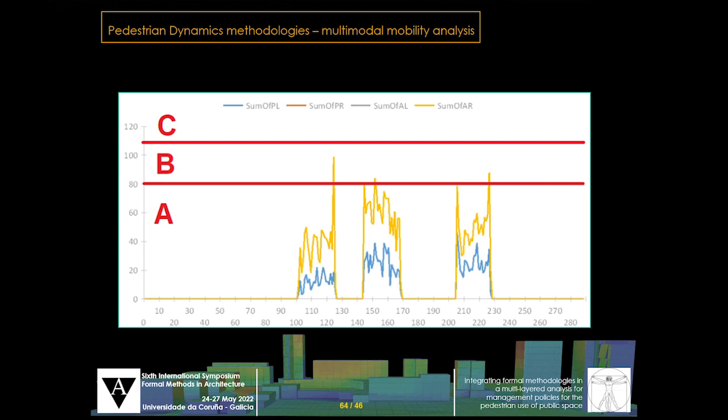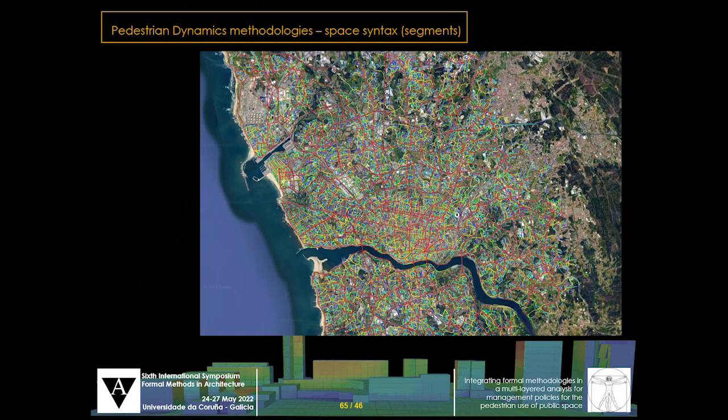The easiest theoretical methods used in the project were those currently used in traffic engineering, multimodal mobility analysis. Here is an example of the levels of pedestrian service for a certain street along the day. Space syntax methodology is another used methodology. For example, segment analysis were carried out to be able to integrate the analysis of small areas of public space.